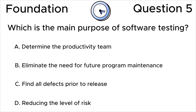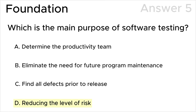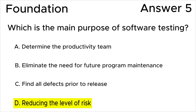Please press pause to choose your own answer before you see the correct answer on the screen. The correct answer is D — reducing the level of risk — according to the ISTQB syllabus. We will see the exact quote for this in the section explanation a little later.